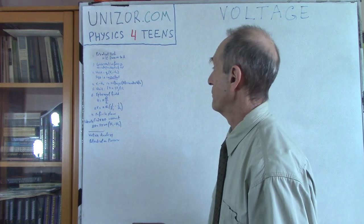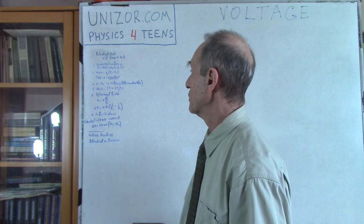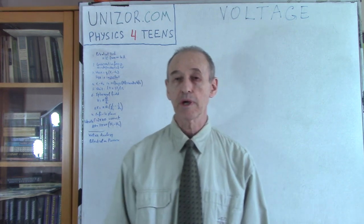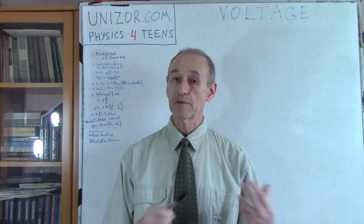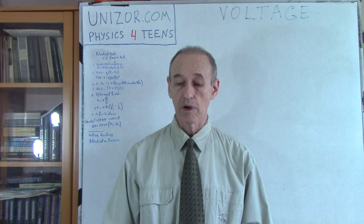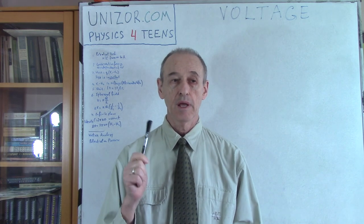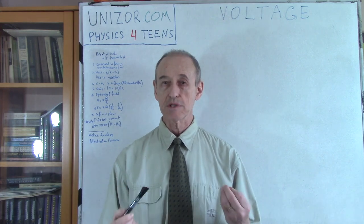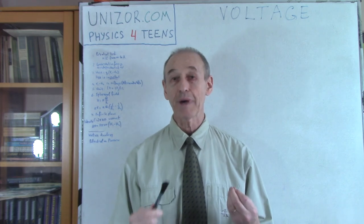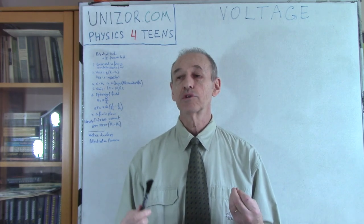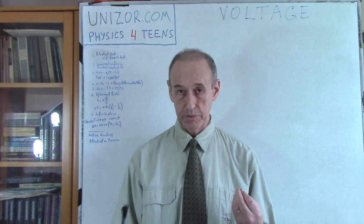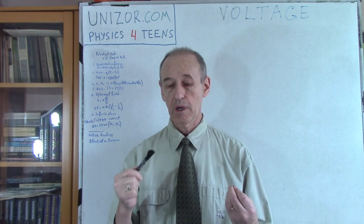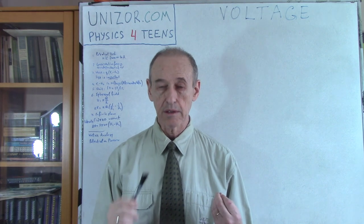We're talking about voltage. Voltage is a derived characteristic, and the primary characteristic is something we have already learned before — it's called potential. Every point of the electric field has a characteristic called potential. Potential is, by definition, the amount of work to bring a probe object of plus one Coulomb from infinity to that particular point in the electric field.